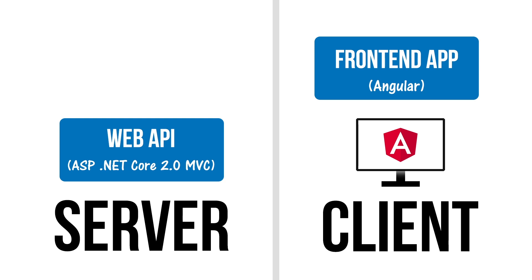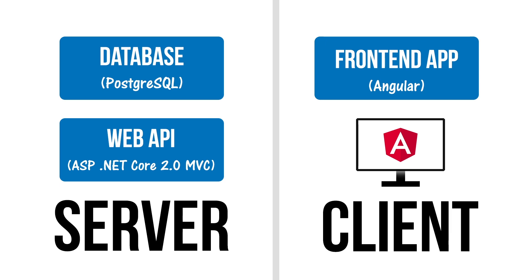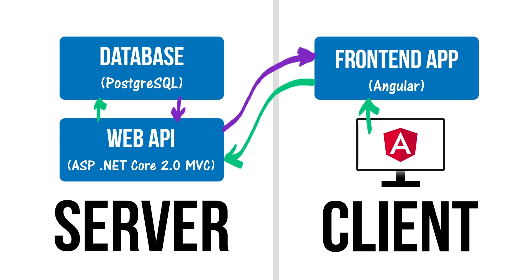Over on the server side, we'll be running a web API in ASP.NET Core 2.0 MVC, and that application will be talking to a Postgres database. So all the data for our application will be stored in a Postgres SQL database, and the web API will have various endpoints to collect data from that database. For example, we might make some requests for data from our client, and then Angular will make a request out to our web API, which in turn will collect some data from our database. The web API will return some result back to our Angular application, which we can then display to our user.